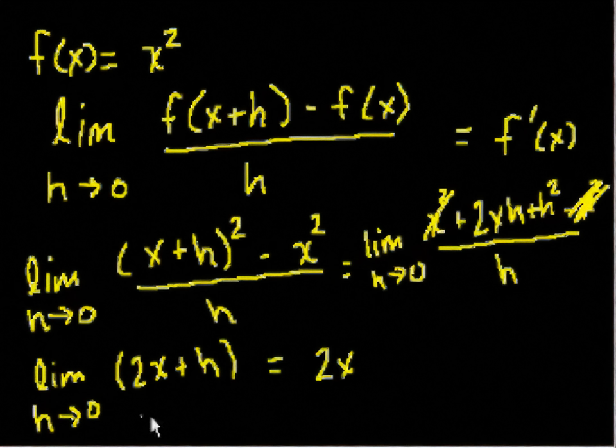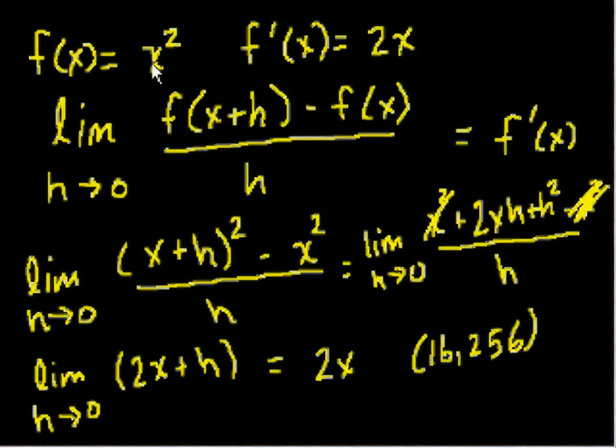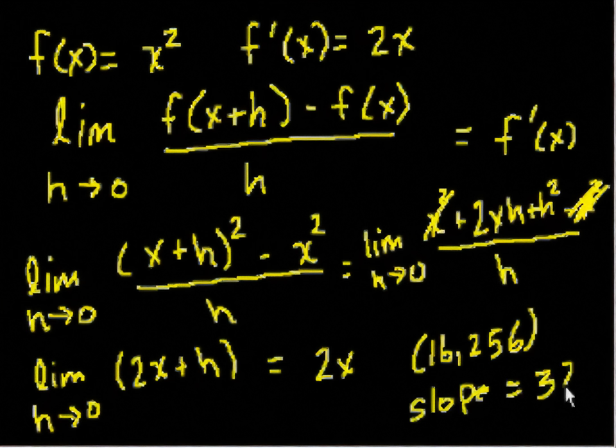So there we have it. The limit as h approaches 0 is equal to 2x. So now we know that this is equal to f prime of x. So the derivative of f(x), which is denoted by f prime of x, is equal to 2x. Well, what does this tell us? Now I can give you any point along the curve. Let's say we want to know the slope at the point 16, 256. That's a point along f(x) equals x squared. It's just 16 and then 16 squared. What's the slope at that point? Well, we now know the slope is 2 times 16. The slope at that point is equal to 32. Whatever the x value is, you just put it into this f prime of x function, or the derivative function, and you'll get the slope at that point. I think that's pretty neat.